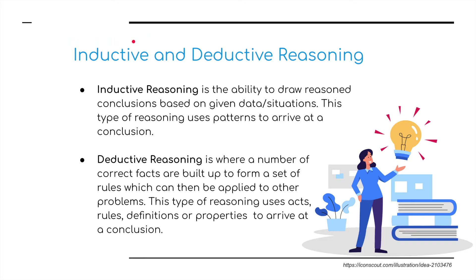Two different types of reasoning we need to look at when talking about Artificial Intelligence. First, inductive reasoning — this is the ability to draw reasoned conclusions based on given data situations. This type of reasoning uses patterns to arrive at a conclusion. Whereas deductive reasoning is where a number of correct facts are built up to form a set of rules, which can then be applied to other problems. This type of reasoning uses facts, rules, definitions, or properties to arrive at a conclusion.